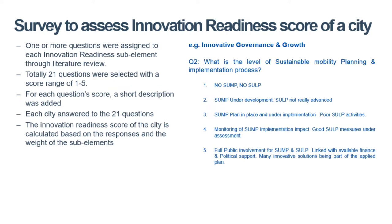An indicative question can be seen in this slide. Each different response corresponds to one score. For example, the lowest value of 1 means that the city has neither a SUMP nor a SULP.